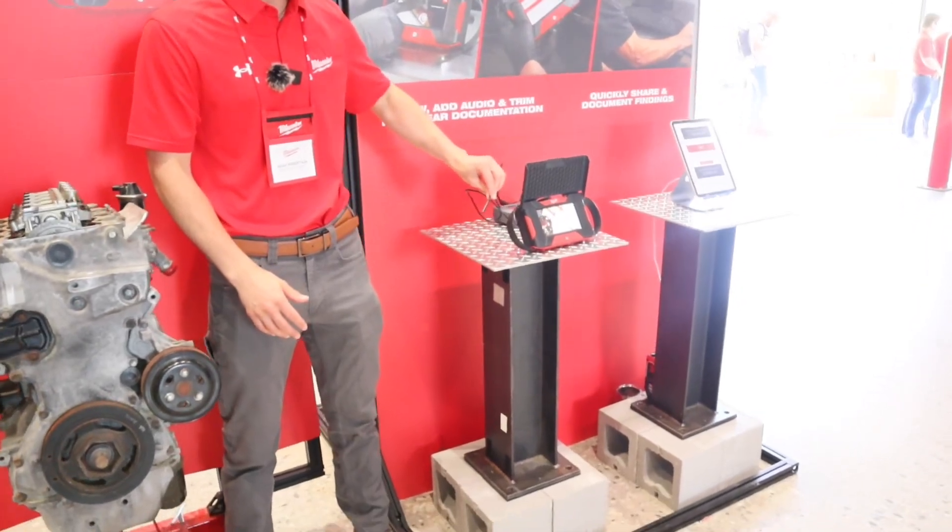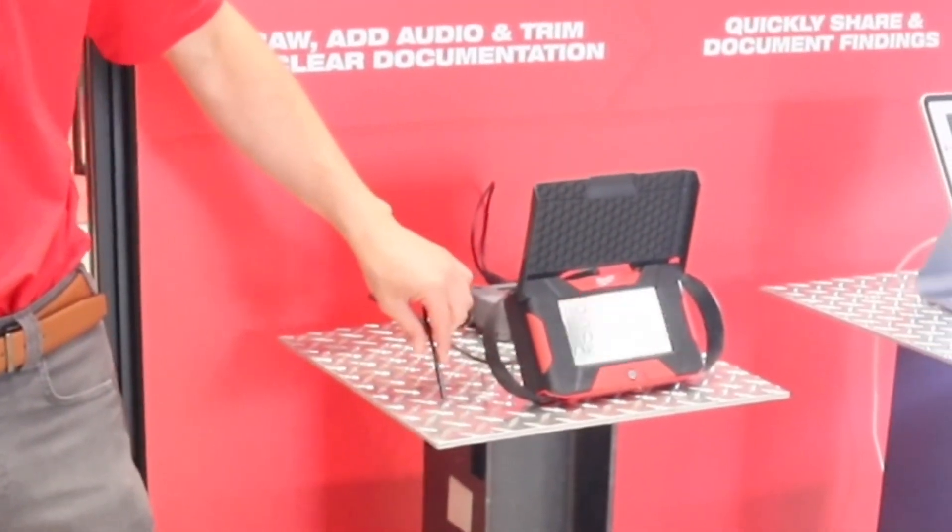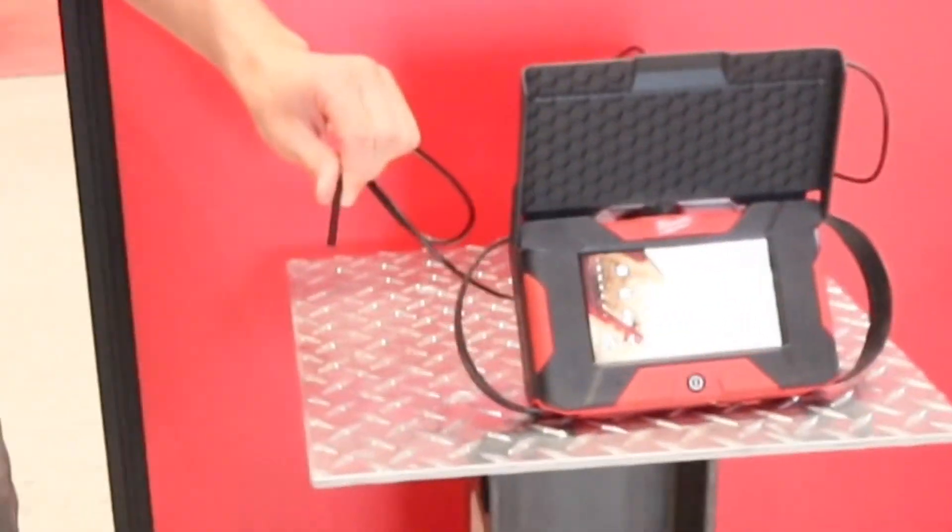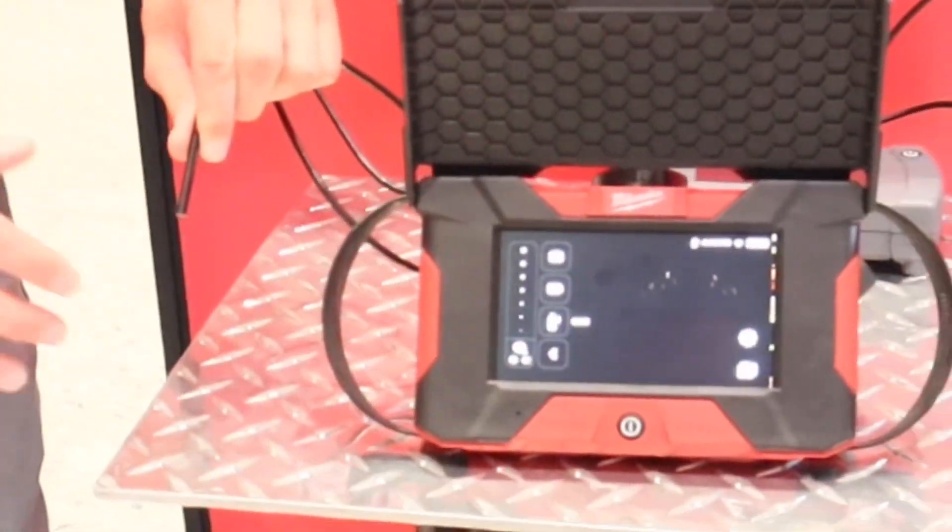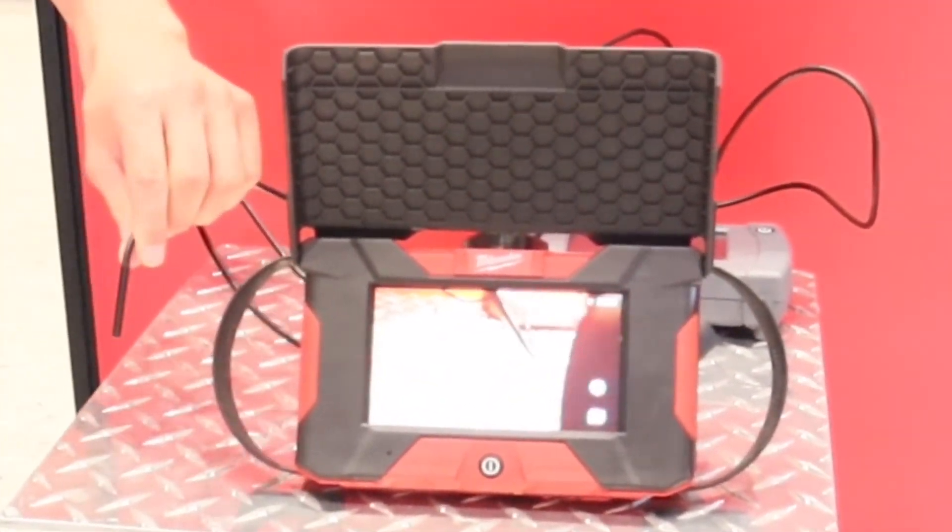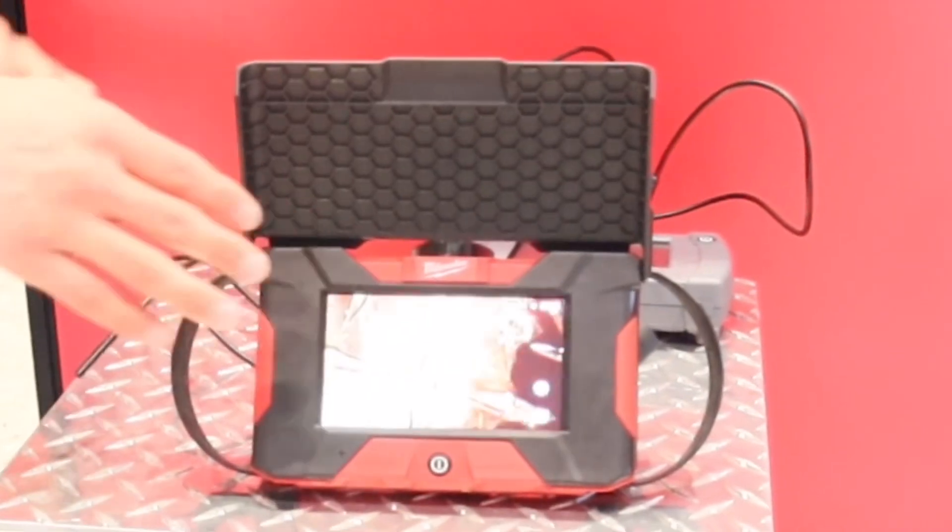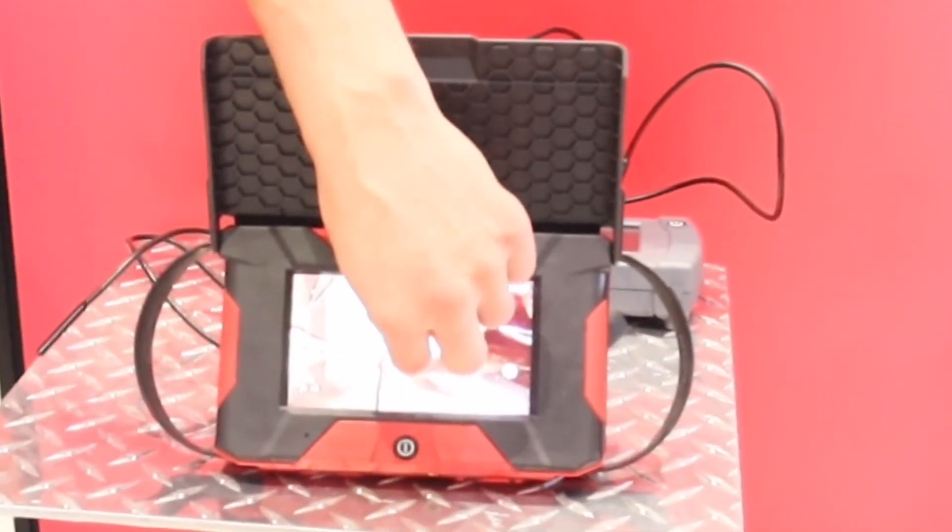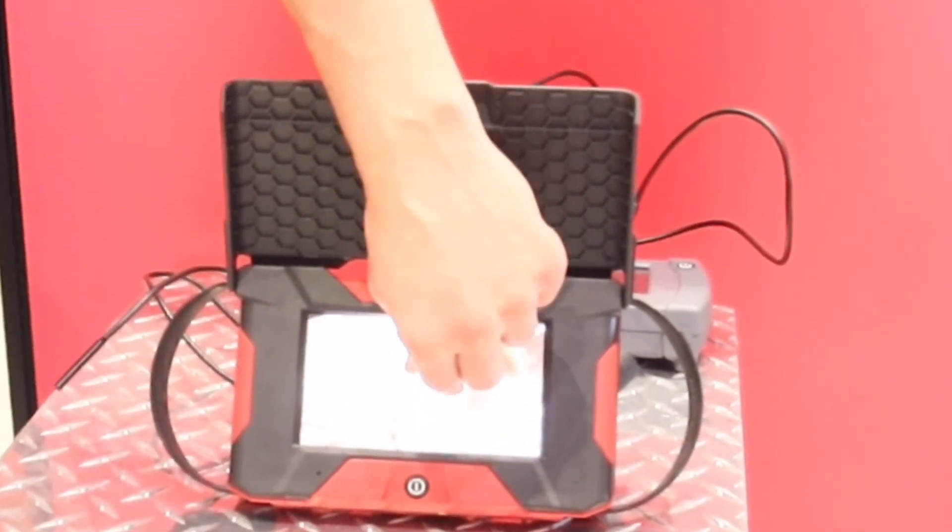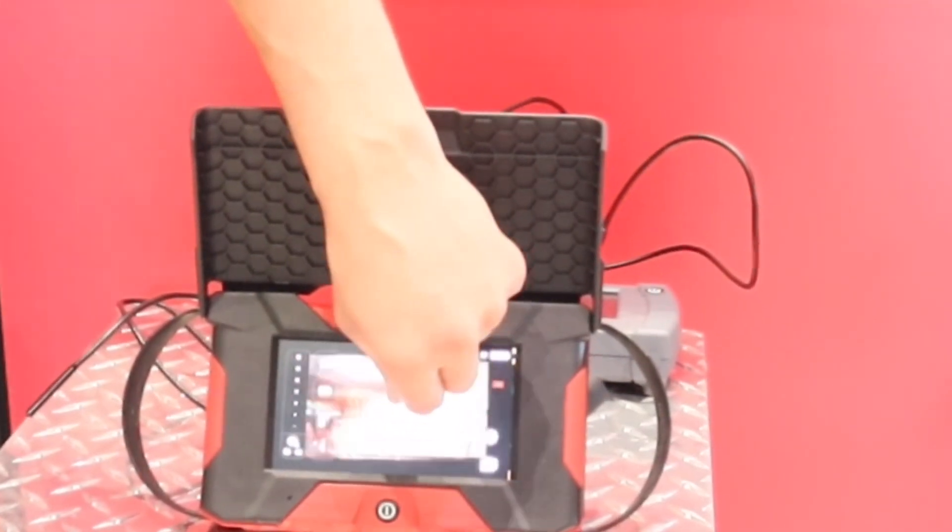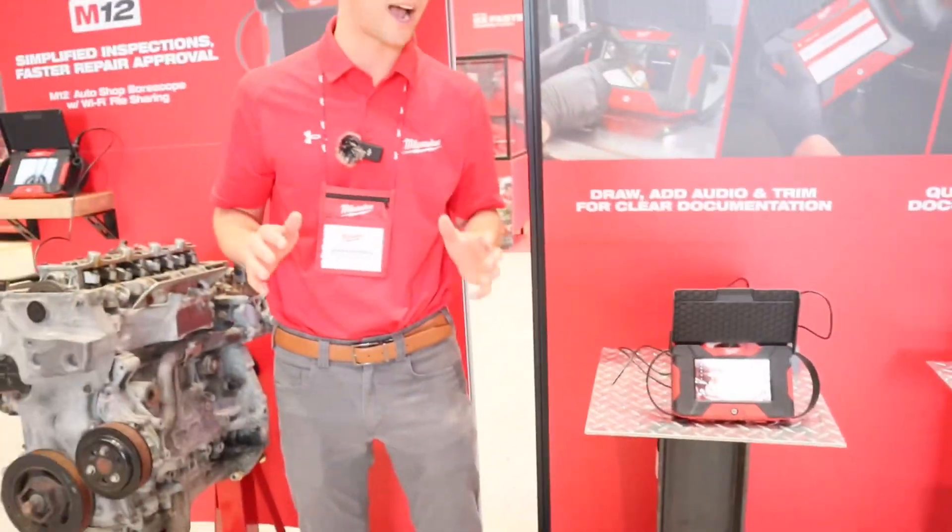You've got your five millimeter camera head, just super tiny, gets you to tight access areas. You've got the ability to use front and side view cameras on here that are high definition. You also have a high definition 5.5 inch touchscreen display that allows you to zoom in up to four times and rotate that image too, so you can really capture exactly what you're looking at.